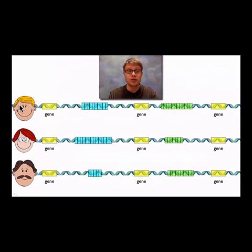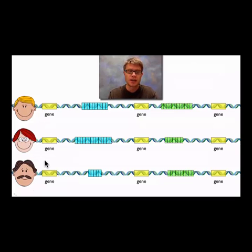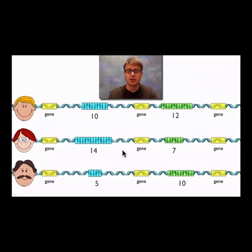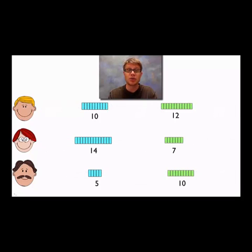So what does that look like? If we have three individuals — Mr. Blonde, Mrs. Red, and Mr. Mustache — their genes are going to be the same, but these STRs are going to be different. These short tandem repeats are going to be different. You can see that Mr. Blonde has more than Mr. Mustache and less than Mrs. Red. If I count them out and remove everything else, what we get is variability between all individuals. Everything else was the same, but we see variability in these STR regions.